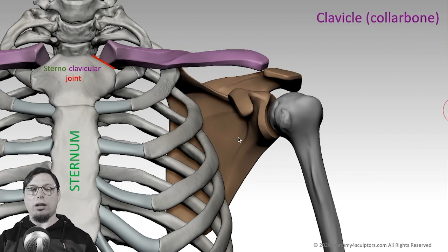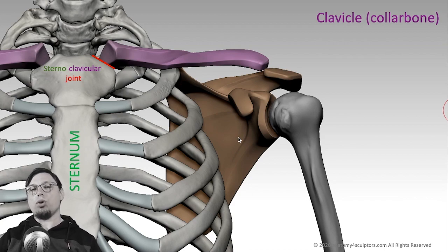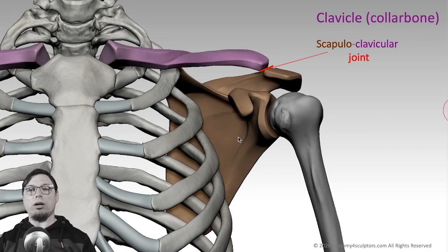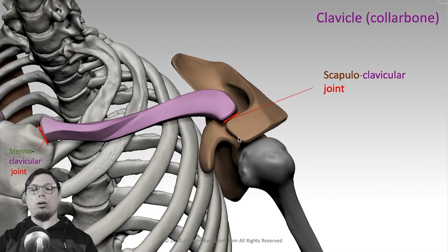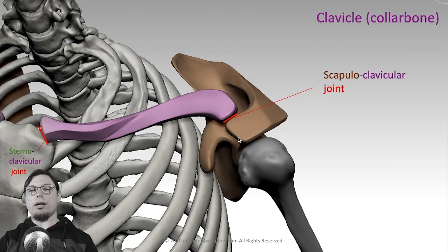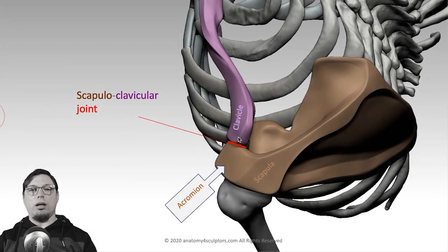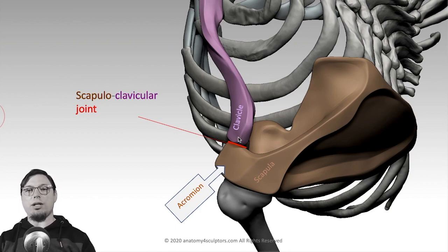As we know, the scapula is a free-floating bone — it's not connected with any joint to the trunk. The only strict joint is the joint with the clavicle. The acromial end of the clavicle is connected to the acromion process, and this joint is called the scapuloclavicular joint. It comes under the acromion process, so the scapula kind of wraps the clavicle, and the clavicle doesn't reach the end of the shoulder. The acromion closes the whole structure and makes it stronger.